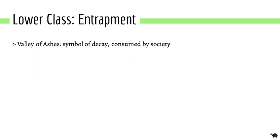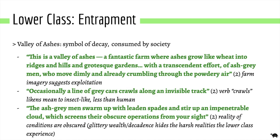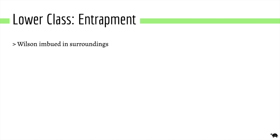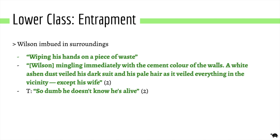Entrapment is also a theme with the lower class, seen in the Valley of Ashes, which is a physical symbol of decay. The lower class are almost consumed by society — there's a sense of exploitation, linking to farming and wheat, and a dehumanisation of the lower class, particularly in chapter two, with descriptions of people being grey and almost blending in. Wilson, for example, is described as a shell, completely lost as a character, 'mingling immediately with the cement colour of the walls,' and Tom says he's so dumb he doesn't know he's alive.